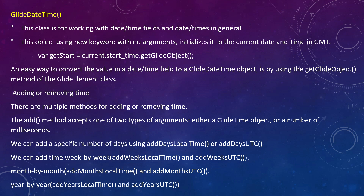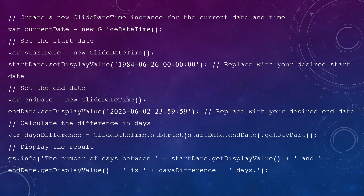We can also add time week by week — for example, adding a particular week within a month. These are all different APIs related to GlideDateTime. To avoid confusion, we need to show a practical example of where GlideDateTime is used.